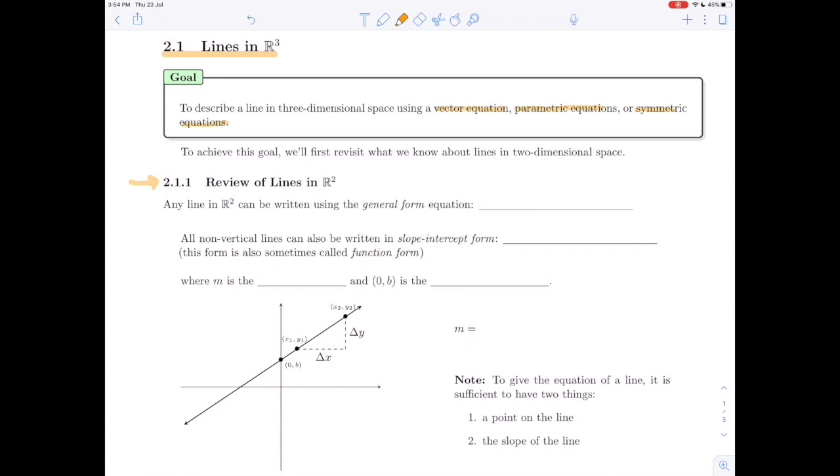Any line in R2 can be written in its general equation form, which you might remember from high school, was ax + by + c = 0.